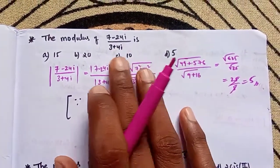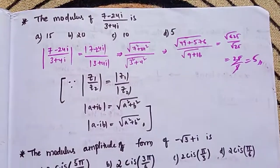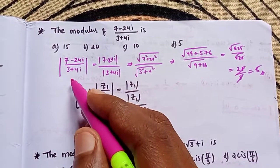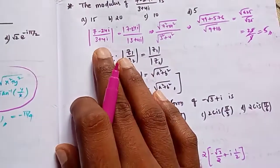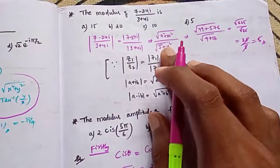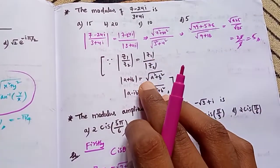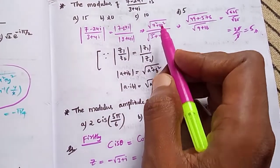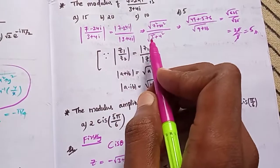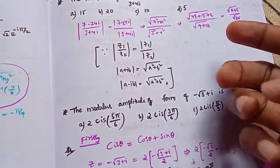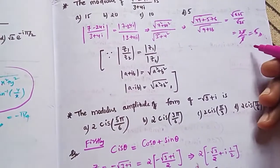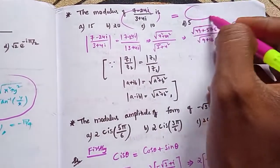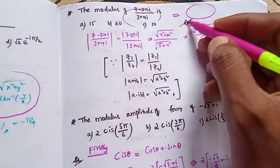The modulus of (7 minus 24i) divided by (3 plus 4i). Using the modulus property |z₁/z₂| = |z₁|/|z₂|, we find the modulus of the numerator and denominator separately using √(x² + y²). The answer is 5.